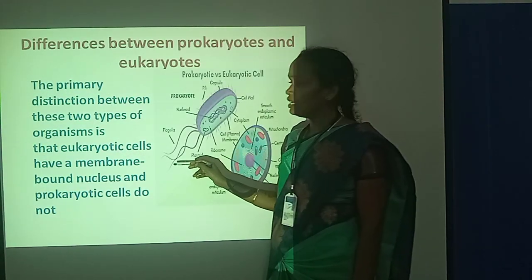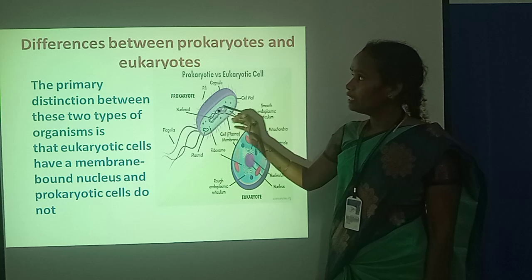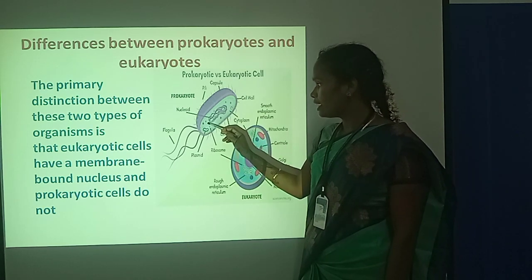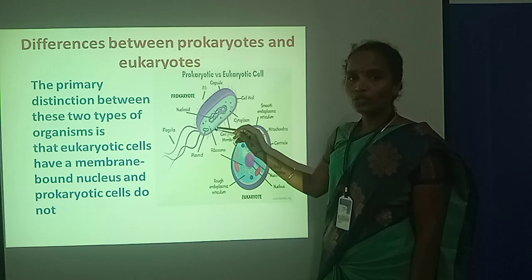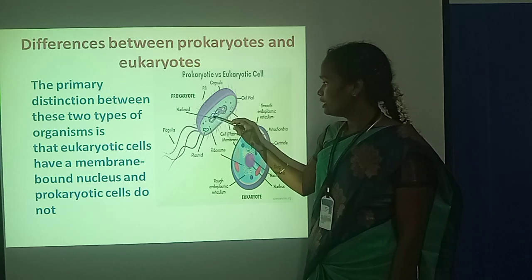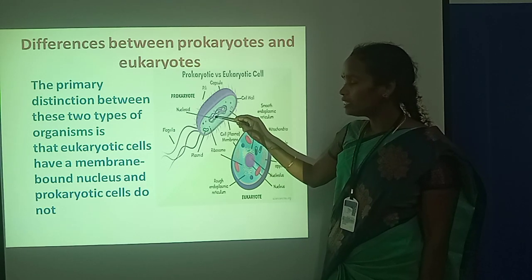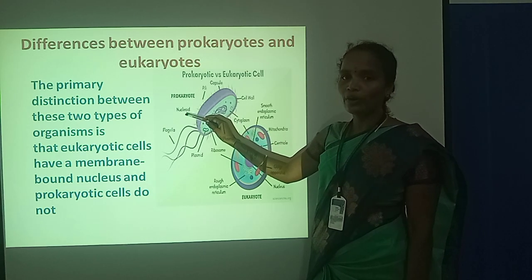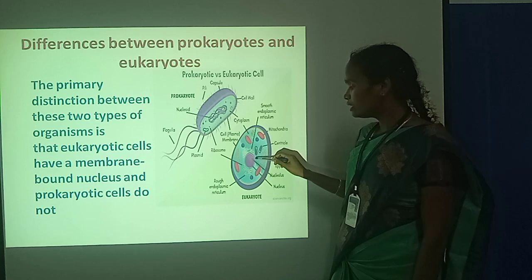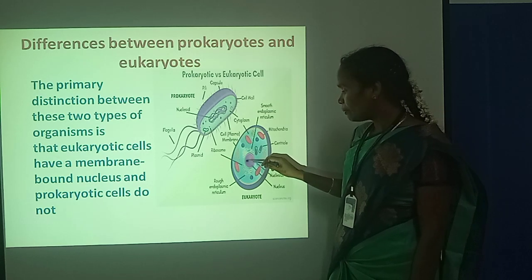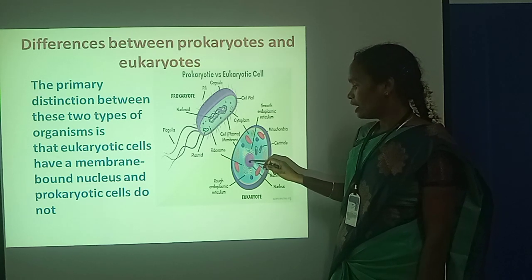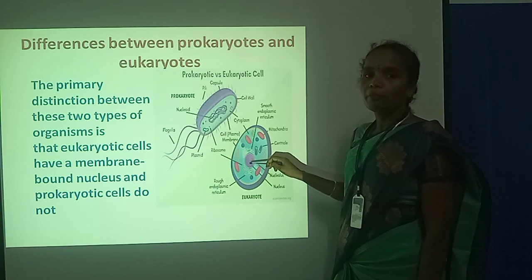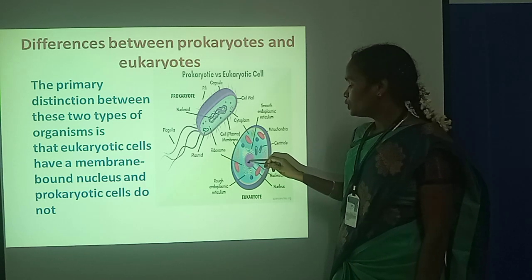Here we discuss about the difference between the prokaryotes and eukaryotes. This diagram shows the prokaryotic structure, where nuclear material is suspended in the cytoplasm — because of this it is called a nucleoid. Whereas the eukaryotic cells separate the nucleus, enclosed with the nuclear membrane, and because of this it is called a true nucleus.